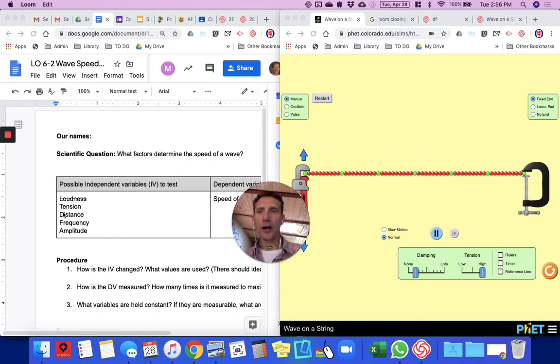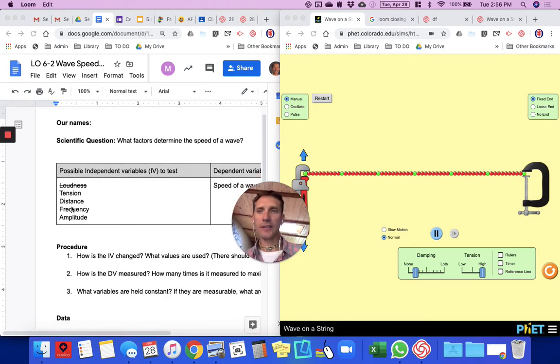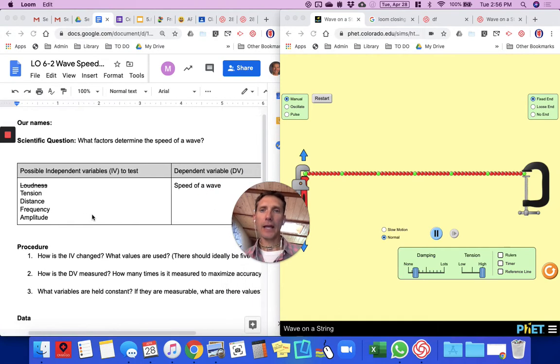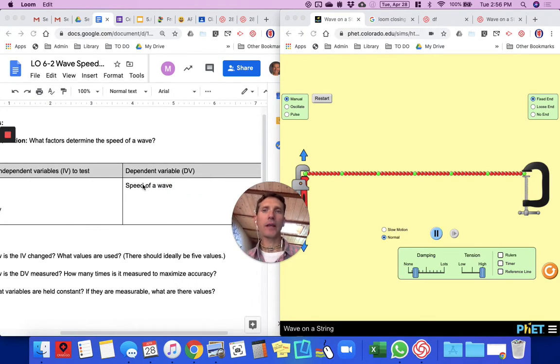I use the word factors, meaning what variables. Our class came up with this list: tension, distance, frequency, and amplitude. And the dependent variable is the speed of a wave.